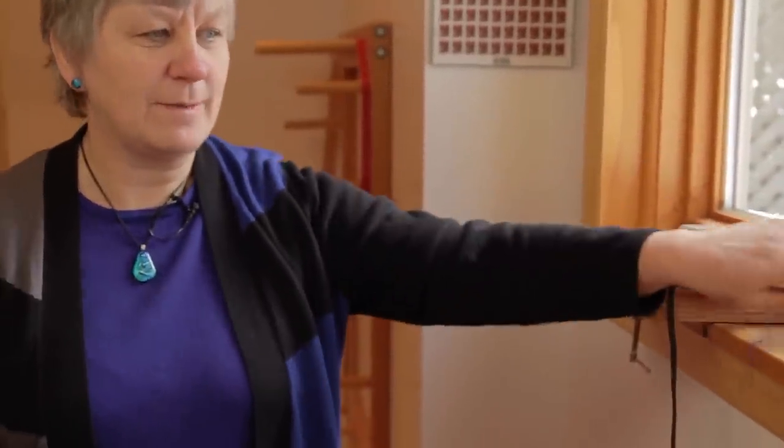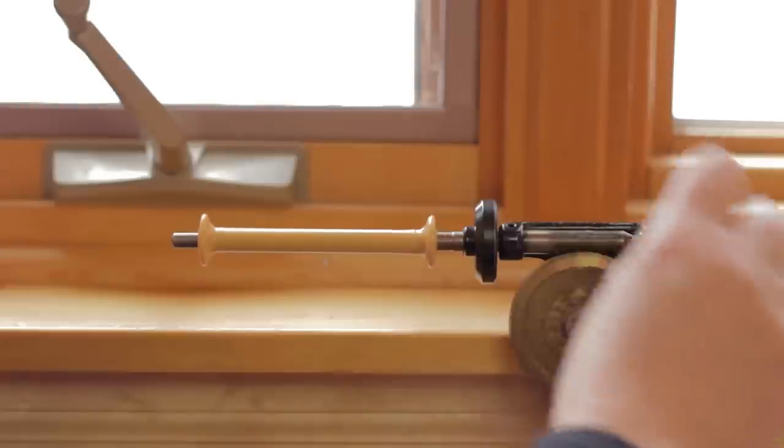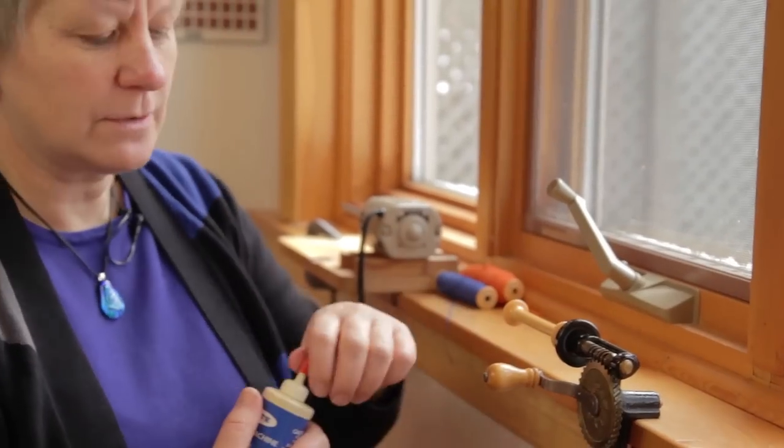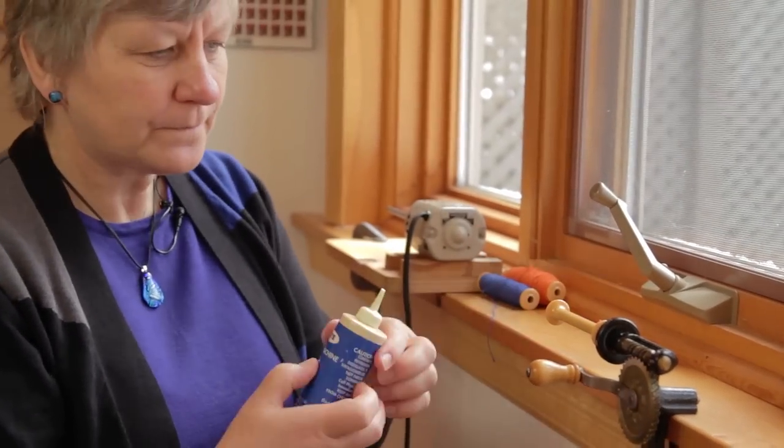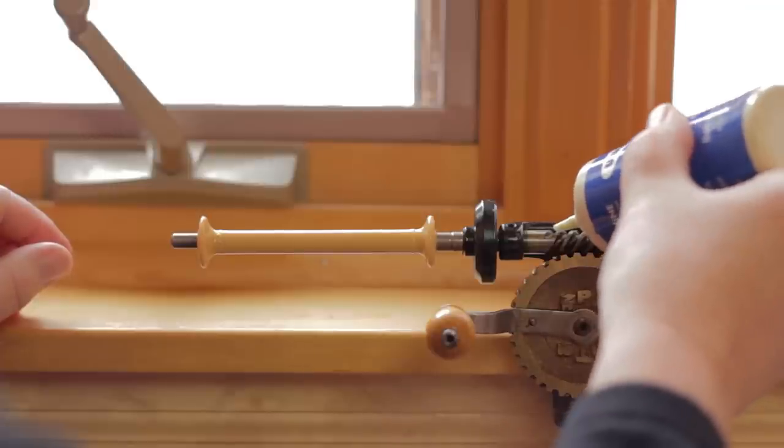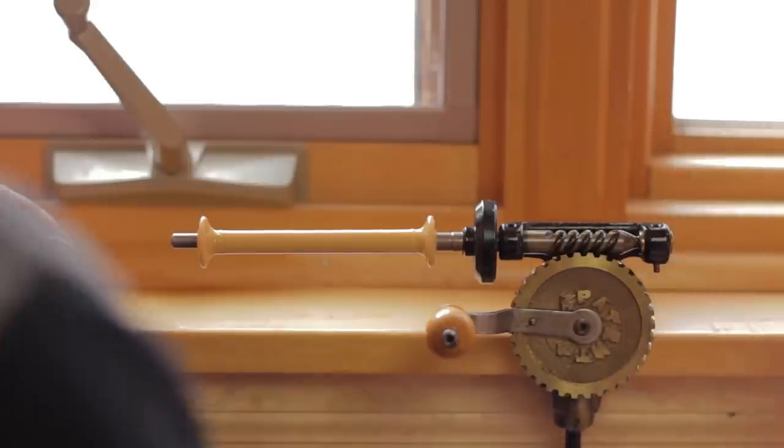Before we start to wind a bobbin the first thing we have to do is to make sure that our equipment is in good shape. Very often bobbin winders need oil. They are wheels and gears and they need to have oil. So use your sewing machine oil or some other light household oil and oil your bobbin winder. In this case I have an open bobbin winder.